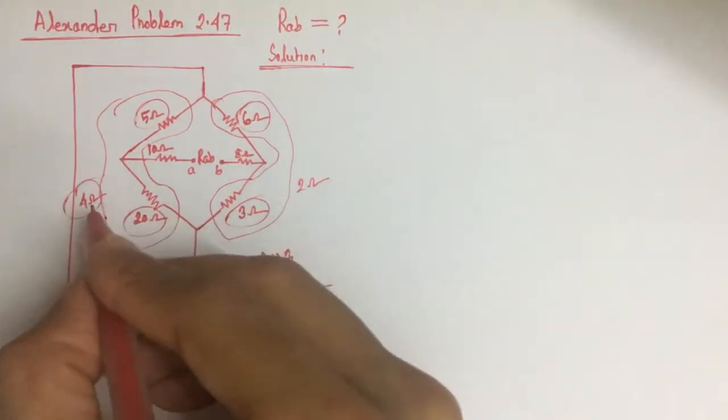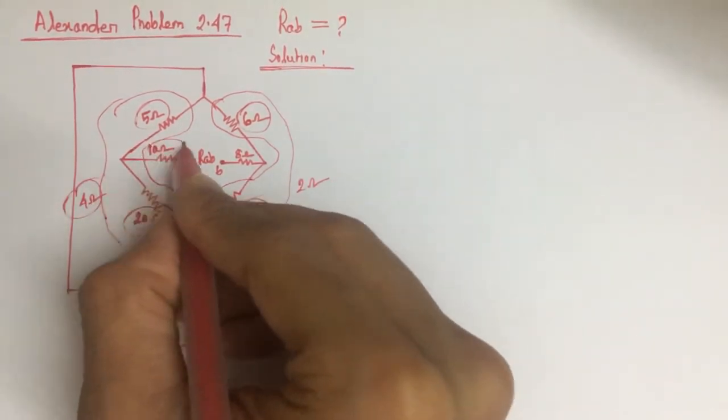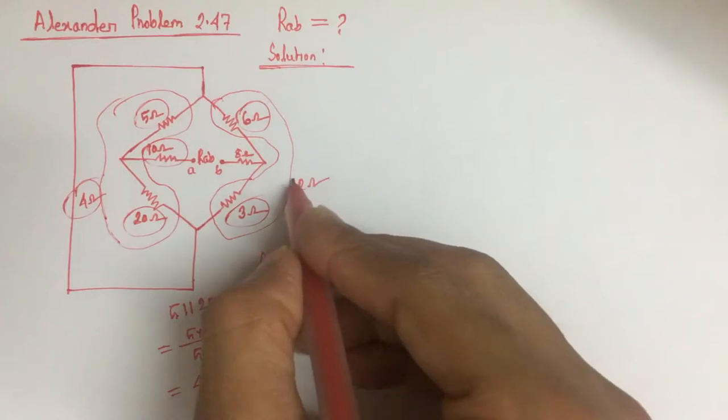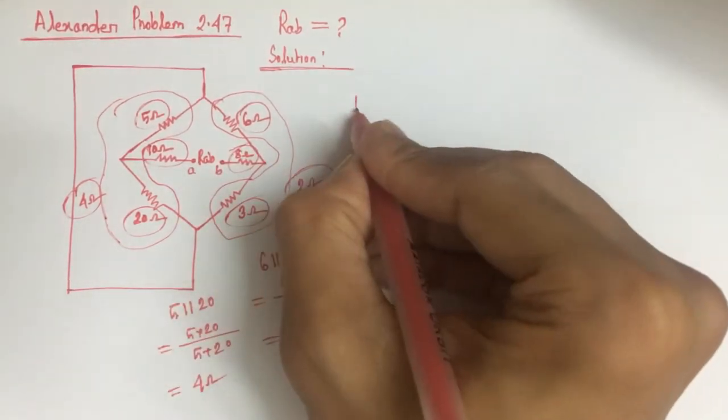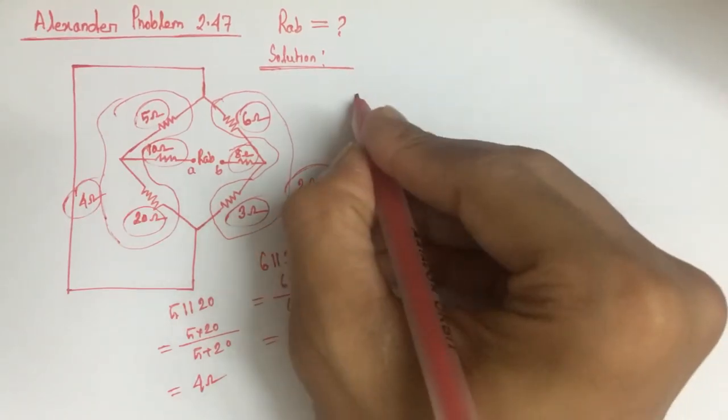Now, this 4 ohm resistance is in series with this 10 ohm resistance, and this 2 ohm resistance is in series with this 8 ohm resistance. So if we draw the simplified circuit,